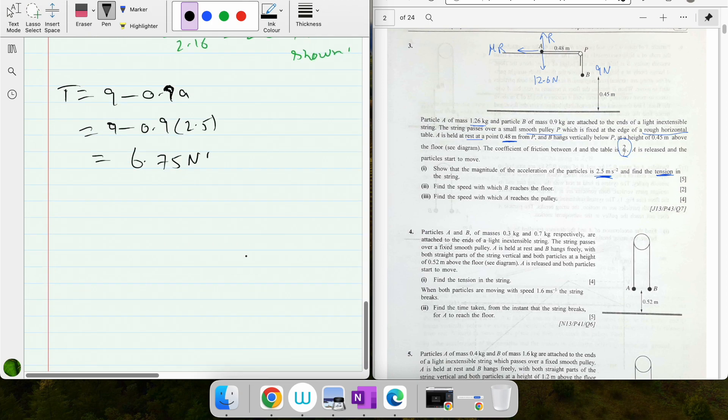Second part of the question: Find the speed with which B reaches the floor. We know that B is at a height of 0.45, we know the acceleration, we know the initial velocity, and we do not know the time.